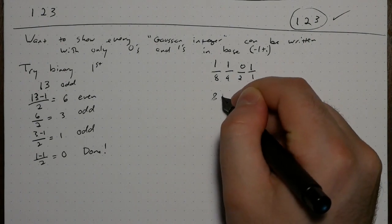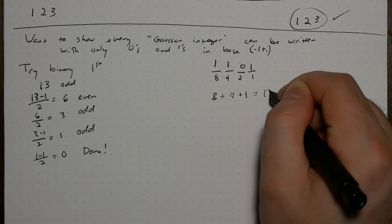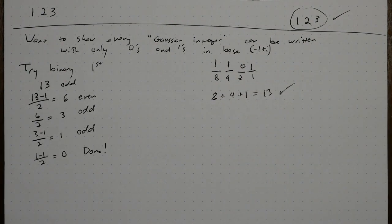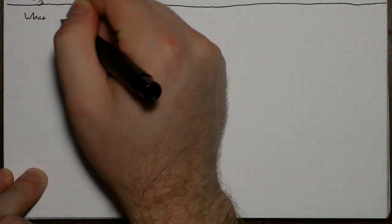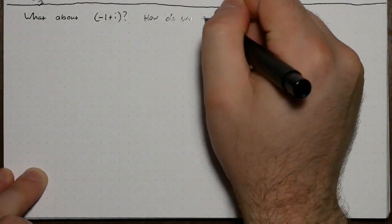You can check that in binary comes out to 13 by adding up the corresponding powers of 2. To apply this to negative 1 plus i, we need to understand how to divide by it.